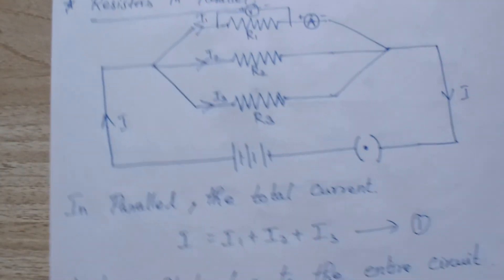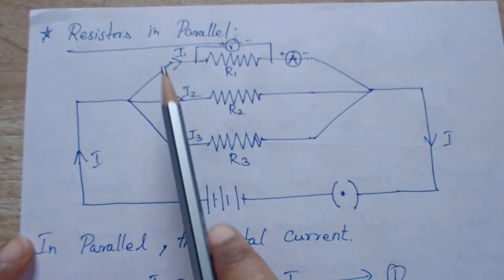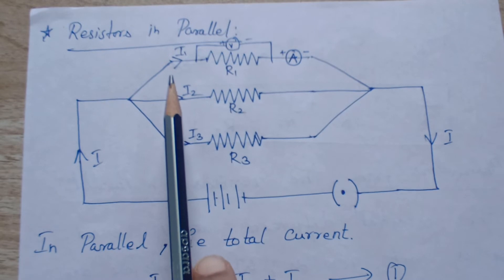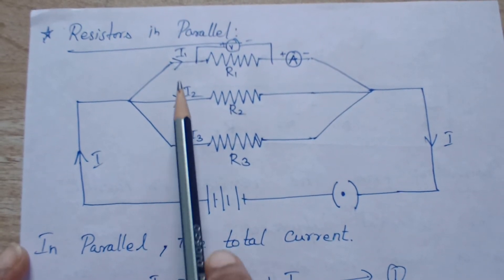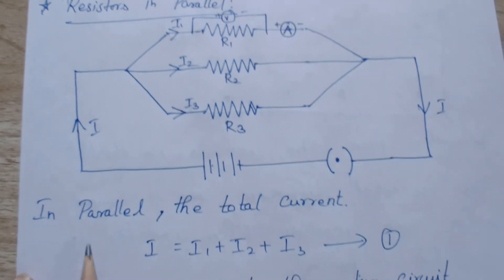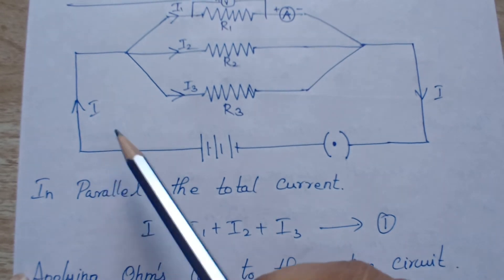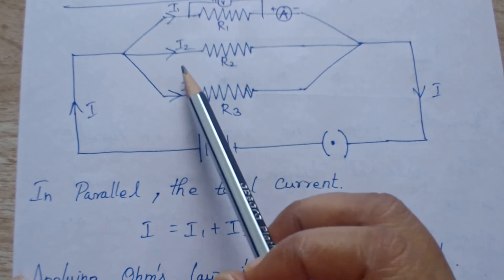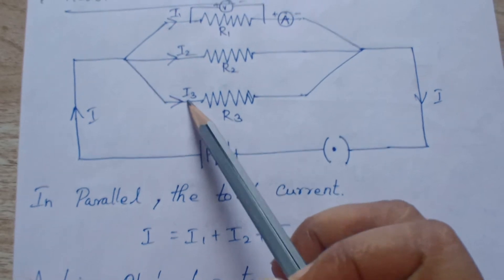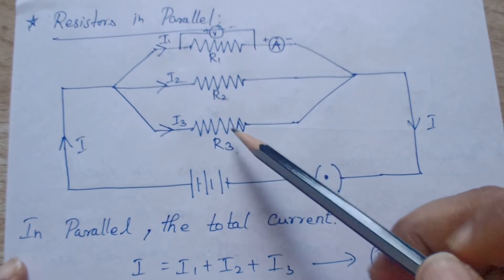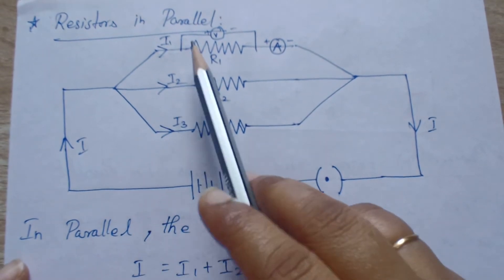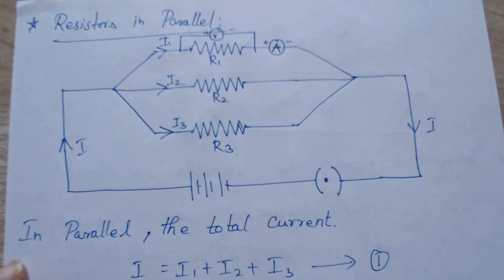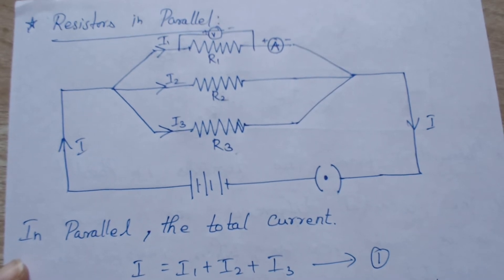Likewise, we have resistors in parallel. When resistors are connected in parallel, the current will not be the same throughout the circuit — it will vary with each branch. The total current I divides into branches: I1 through R1, I2 through R2, and I3 through R3. However, if you measure the potential difference with a voltmeter, it will be the same across all three resistors. This is observed from the lab activity.